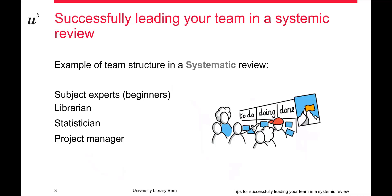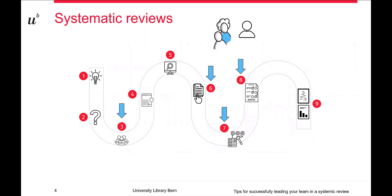It is a huge effort to perform a systematic review, and therefore a team is needed — but that team can be very heterogeneous. You will always work with experts, but possibly you will also have beginners in the topic or in the methodology of a systematic review. You will also work with librarians, and depending on complexity, project managers. The team is crucial because many steps need to be performed twice, and sometimes the opinion of a third researcher is required — specifically for screening, data extraction, and quality assessment.